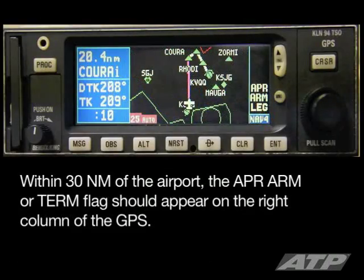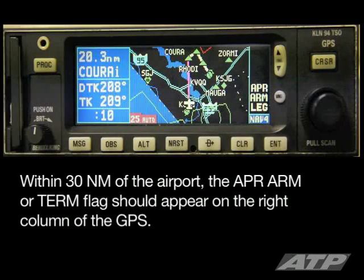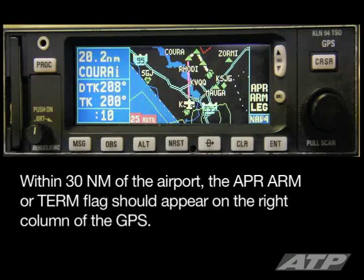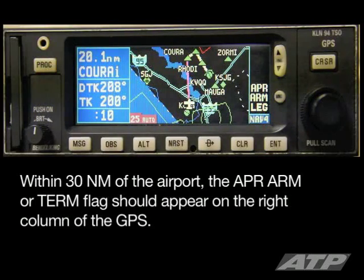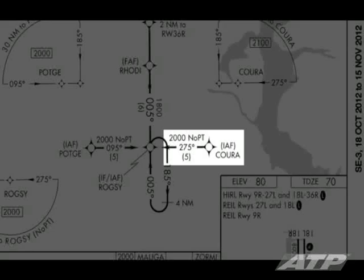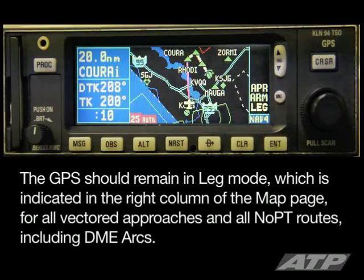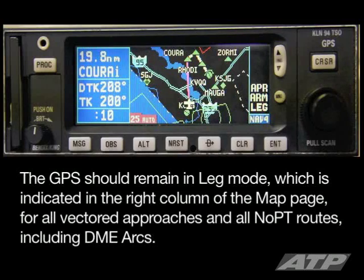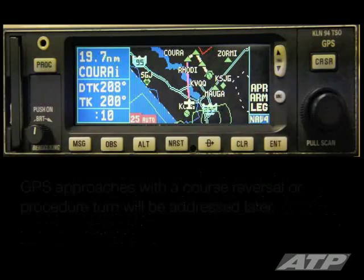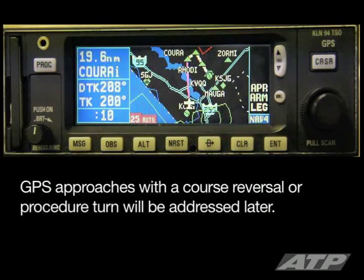Within 30 nautical miles of the airport, the Approach Arm or Terminal flag should appear on the right column of the GPS. This indicates an increased sensitivity of the CDI from 5 nautical miles to 1 nautical mile. CORA indicates no PT, meaning you do not have to complete the procedure turn at ROGSI. The GPS should remain in leg mode for all vectored approaches and all no-PT routes, including DME arcs.